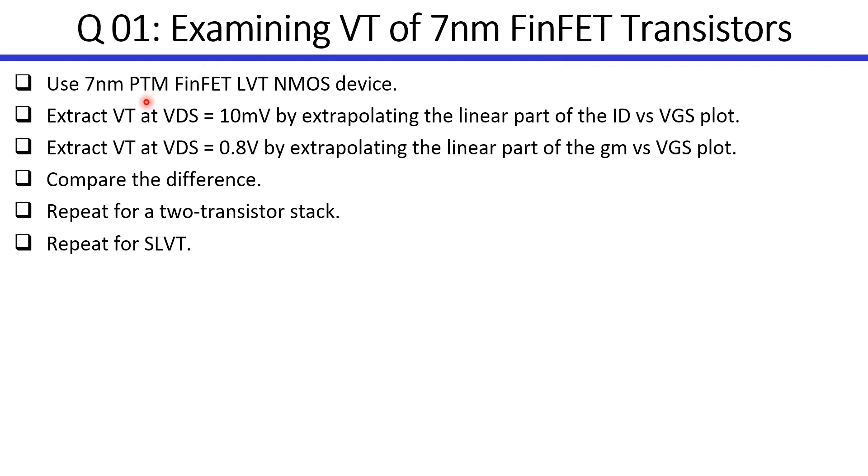We'll start by a 7nm low-VTE NMOS device. We'll extract the threshold voltages at two values of VDS: at VDS equals 10mV in the linear region and at VDS equals 0.8V in the saturation region.